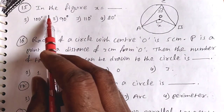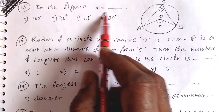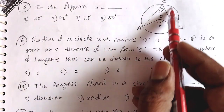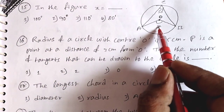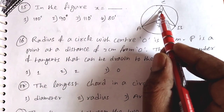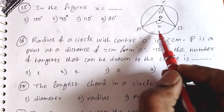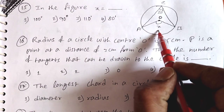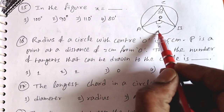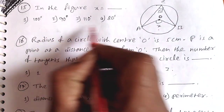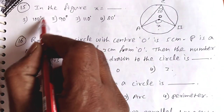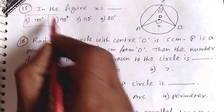Question 15: In the figure, x is equal to what? The x value equals 50 plus 80, which is 100. So x equals 100, and the first option is the answer.